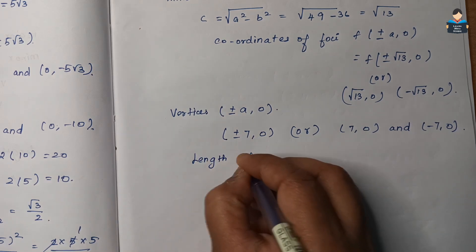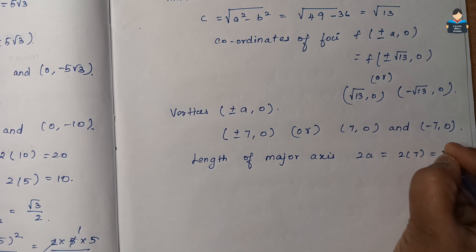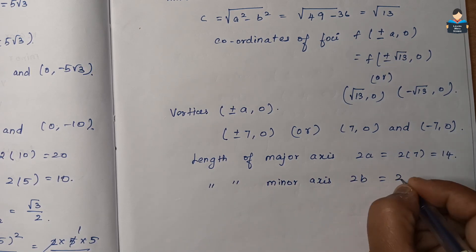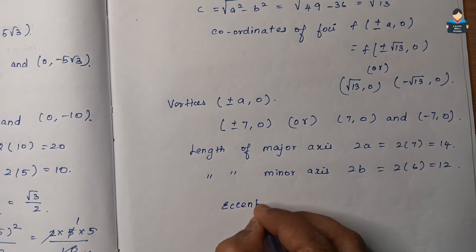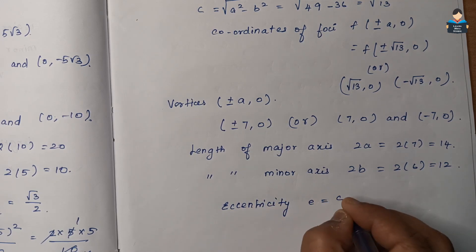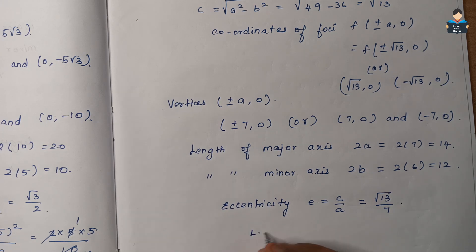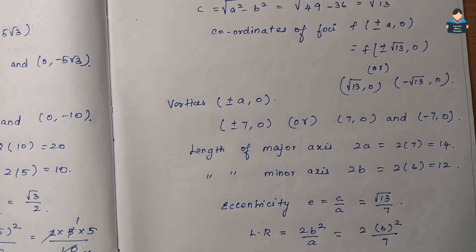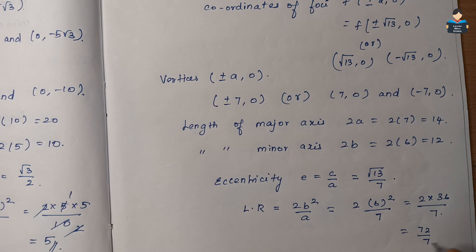Length of major axis = 2a = 2 × 7 = 14. Length of minor axis = 2b = 2 × 6 = 12. Eccentricity e = c/a = √13/7. Latus rectum = 2b²/a = 2 × 36 / 7 = 72/7.